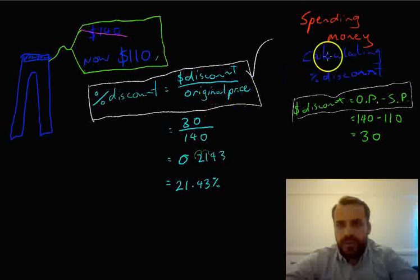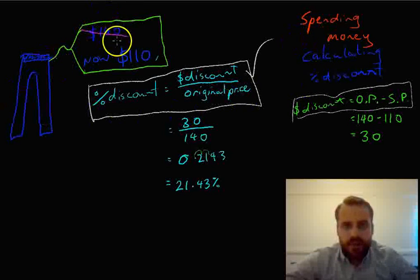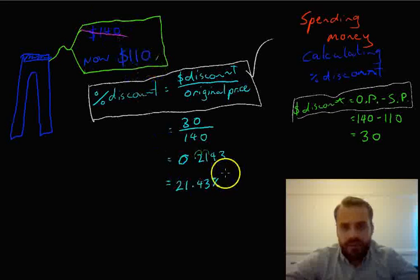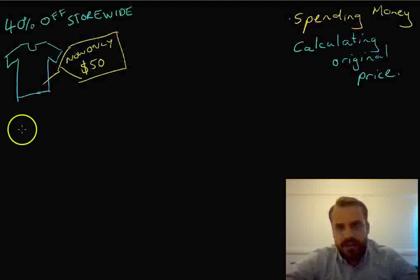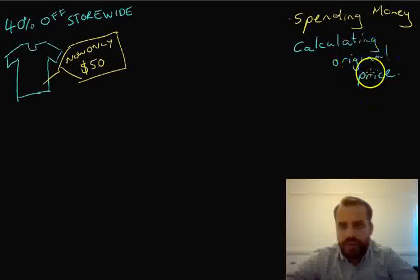So in our past video, you might have seen, we were calculating a percentage discount. We were dealing with our pants there, they were $140 down to $110 and we found a percentage discount. In this video, however, we are calculating the original price.